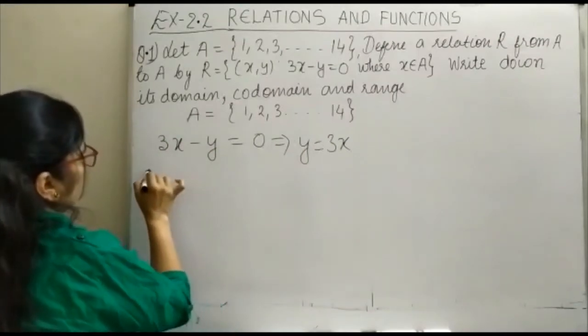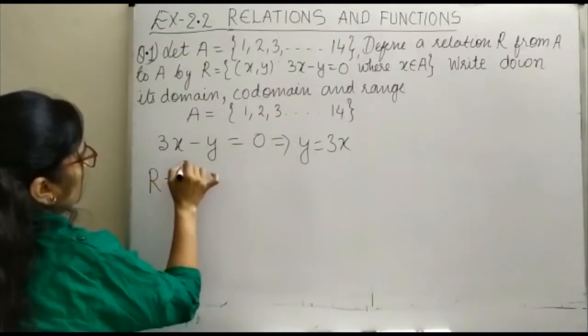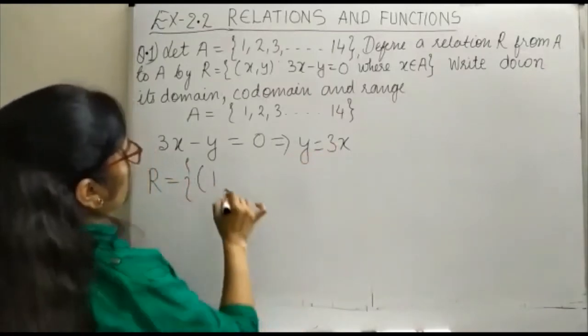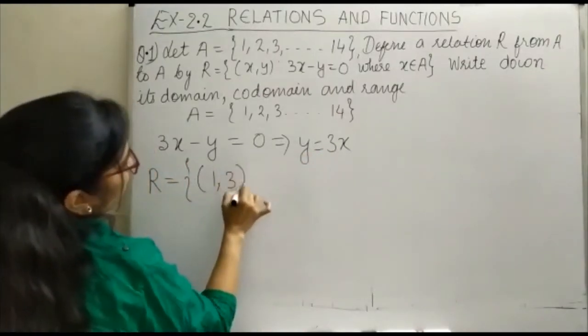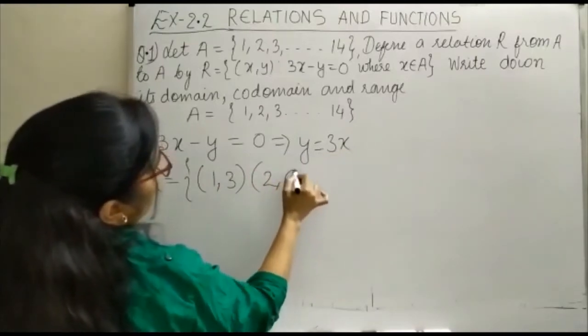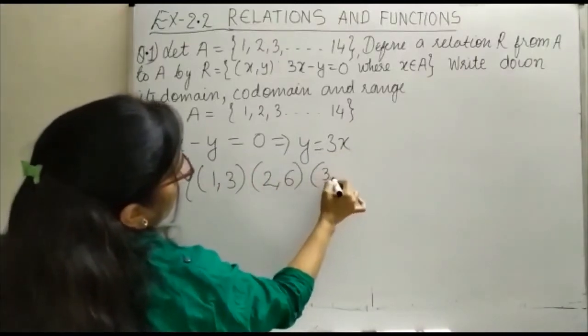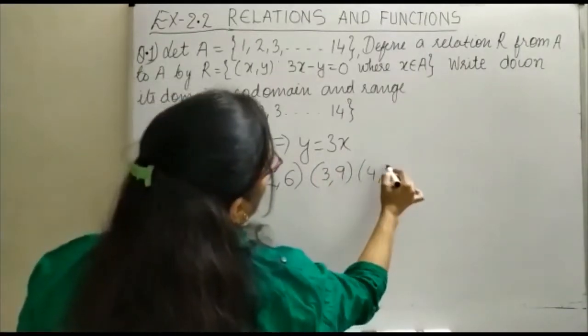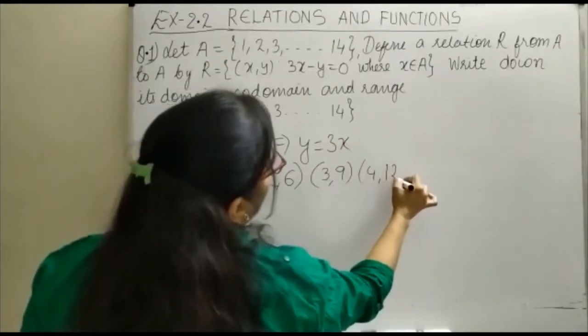X की value जब 1 होगी, हमारे ज़र रिलेशन में order pairs आएंगे. X की value आपने 1 रखी, Y की कितनी होजाएगी? 3. X की value आप 2 लोगे, Y की value कितनी होजाएगी? 6. X की value 3 लेंगे, Y की value 9. और X की value 4 लेंगे, Y की value आपकी होजाएगी 12.